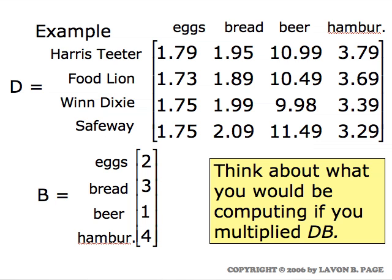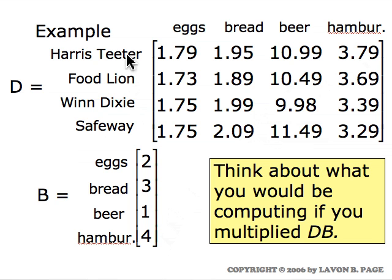What's the significance of the product matrix we would be computing? When we do row one of D times the only column of B, we're computing $1.79 for eggs times two dozen eggs, plus $1.95 for a loaf of bread times three loaves, plus $10.99 for beer times one case, plus $3.79 for a pound of hamburger times four pounds. So what we're calculating is the price of purchasing the entire shopping list if we're shopping at Harris Teeter. Similarly, the second row times that column gives us the price at Food Lion, and the other two rows give us the cost at the other two stores. In summary, the matrix multiplication gives us the cost of doing the shopping at each of the four stores.